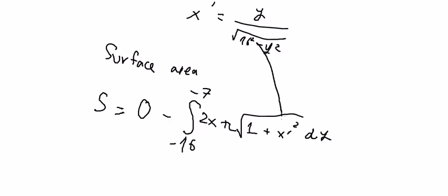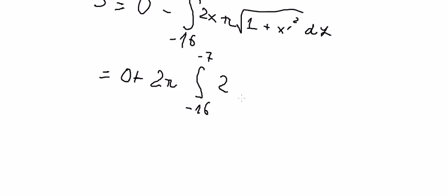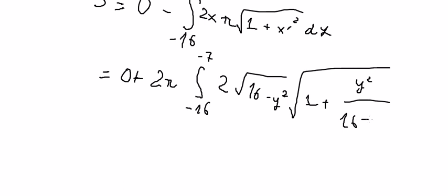So we input these values here. We get a positive result because we have the negative of this one. This gives us y squared over 16 squared minus y squared, and we have dy.